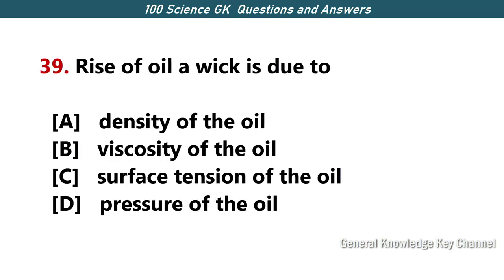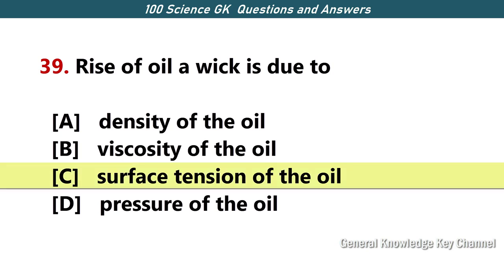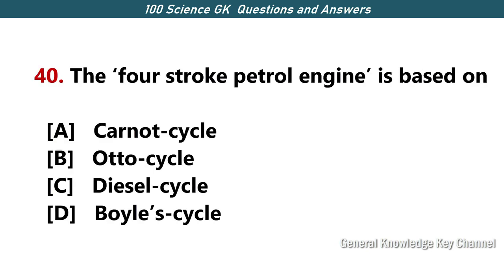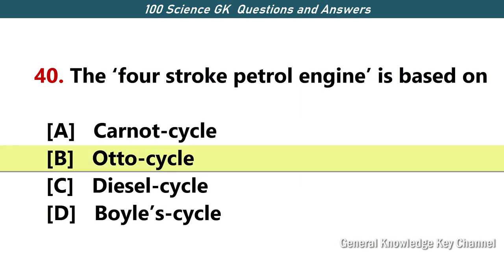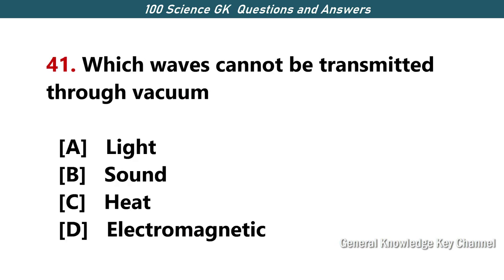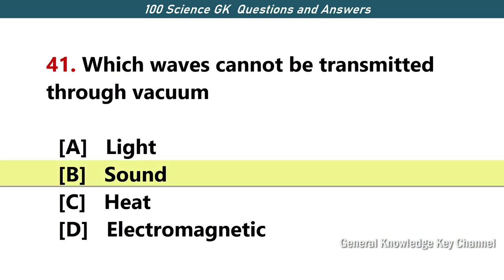Rise of oil in a wick is due to — Answer C — surface tension of the oil. The four-stroke petrol engine is based on — Answer B — Otto cycle. Which waves cannot be transmitted through vacuum? Answer B — sound.